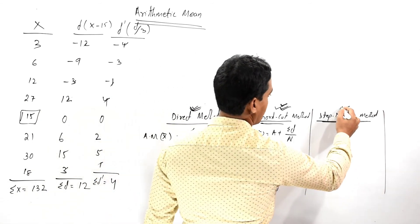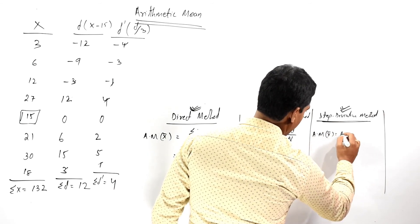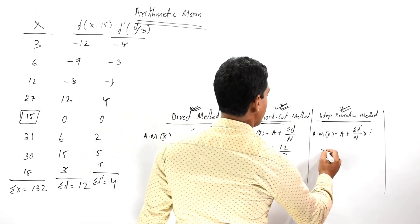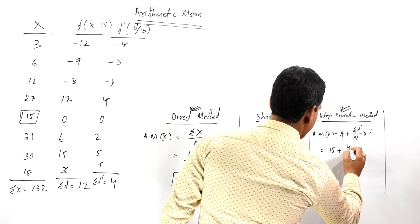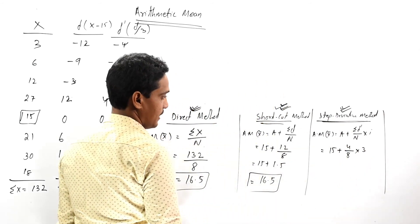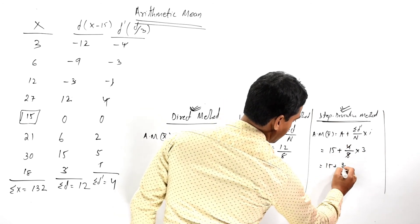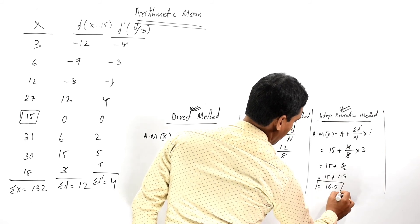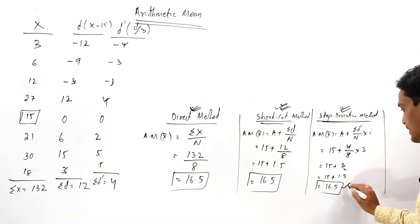Now applying the formula for arithmetic mean under the step deviation method: A plus summation of D dash divided by n, multiplied by i. That is 15 plus 4 divided by 8, into 3. Simplifying: 15 plus one-half into 3 equals 15 plus 1.5 equals 16.5. So the arithmetic mean under the step deviation method is 16.5.